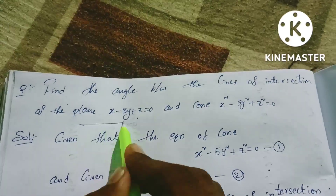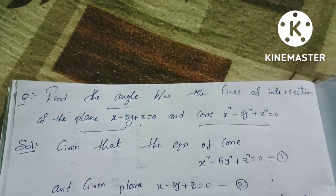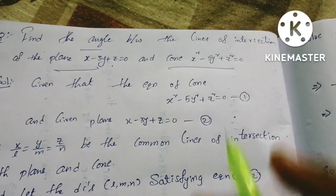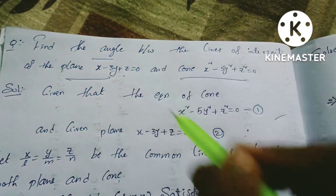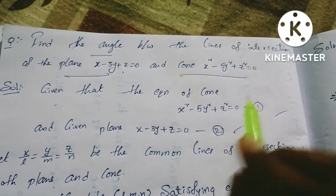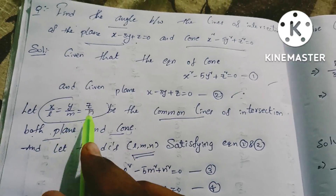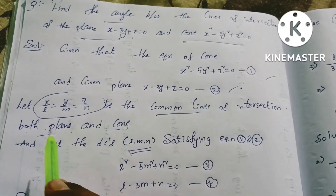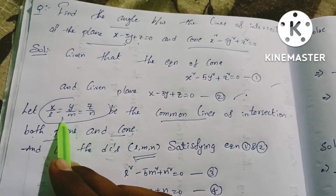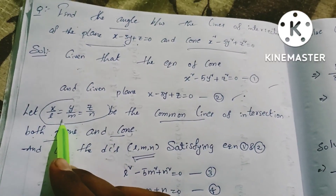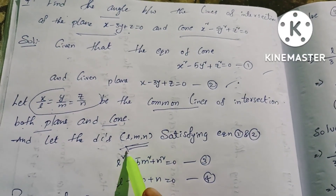If you want a plane, if you want a cone, you can use the angle. So given that, first you can use a cone equation, then you can use a plane equation. Let x/L = y/M = z/N be the common lines of intersection of both the plane and cone. The cone and plane share this common line. Then you can define the plane equation in the direction.